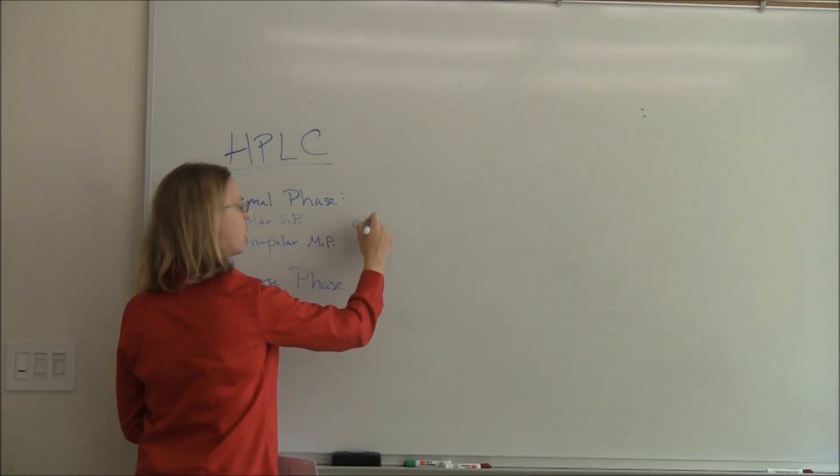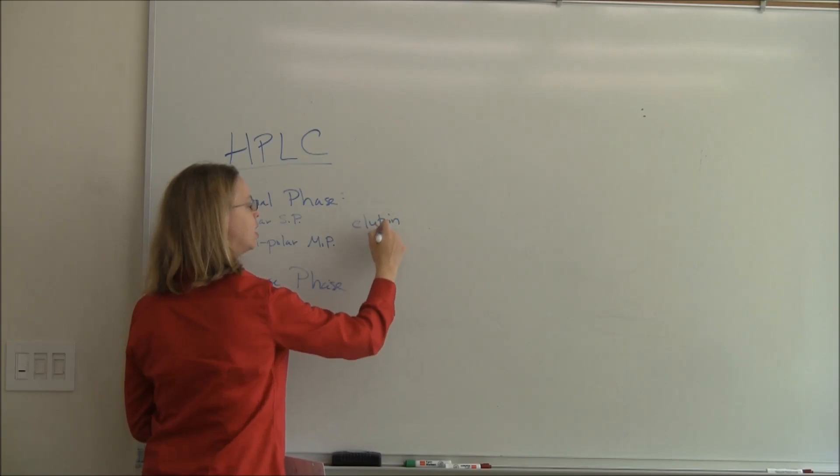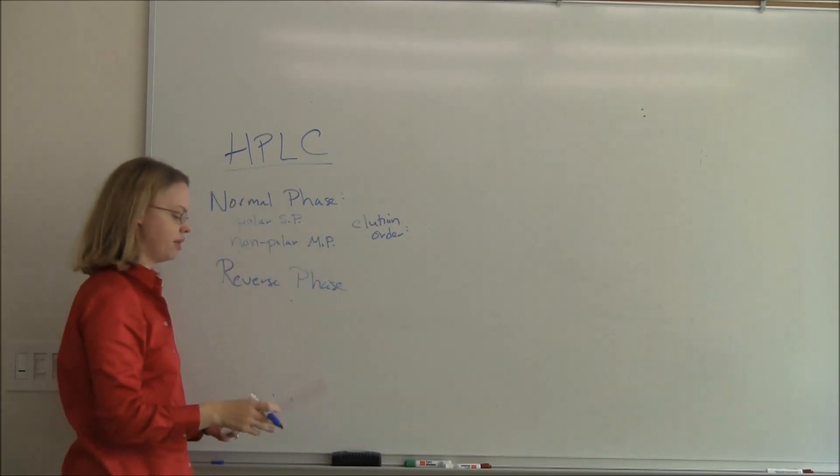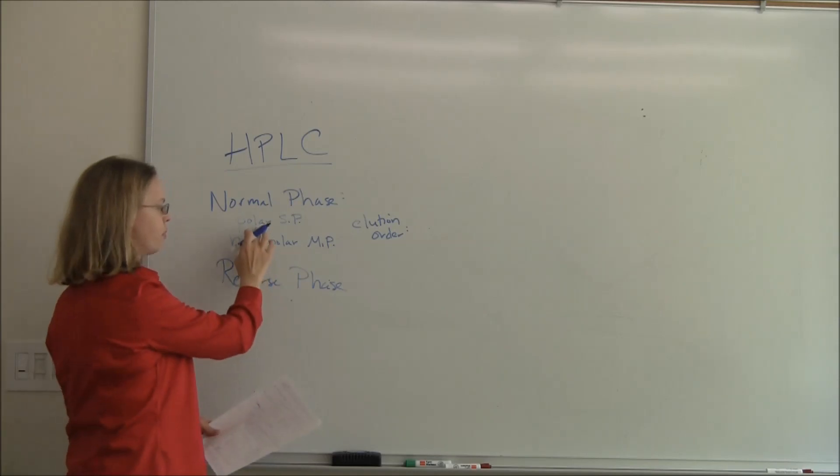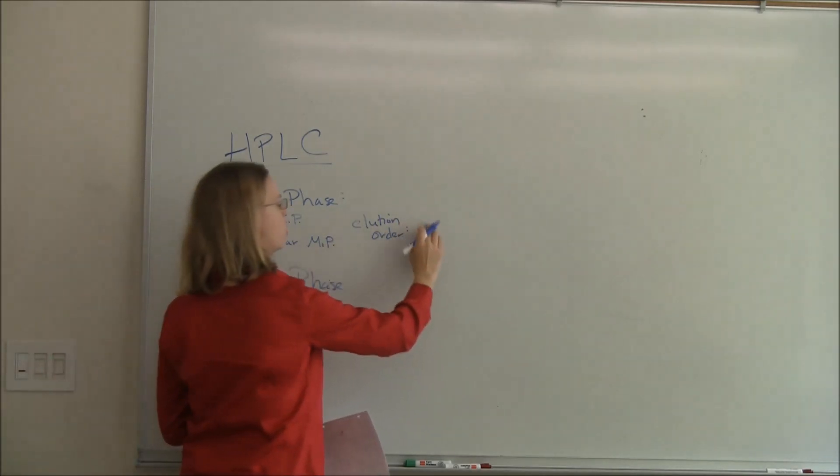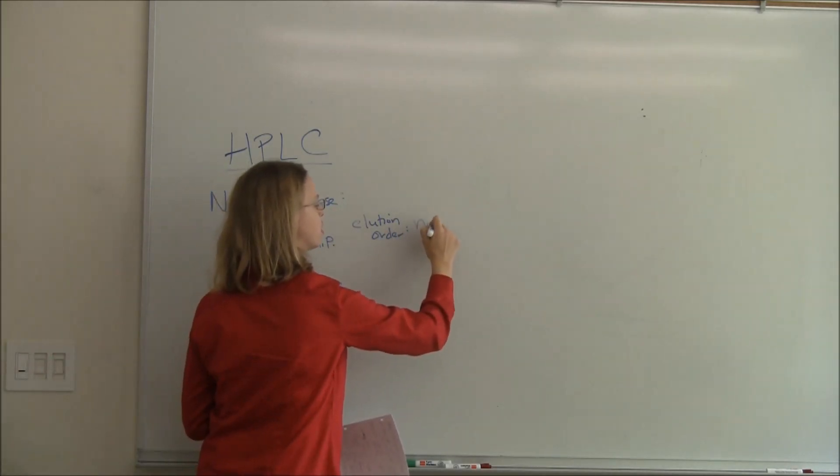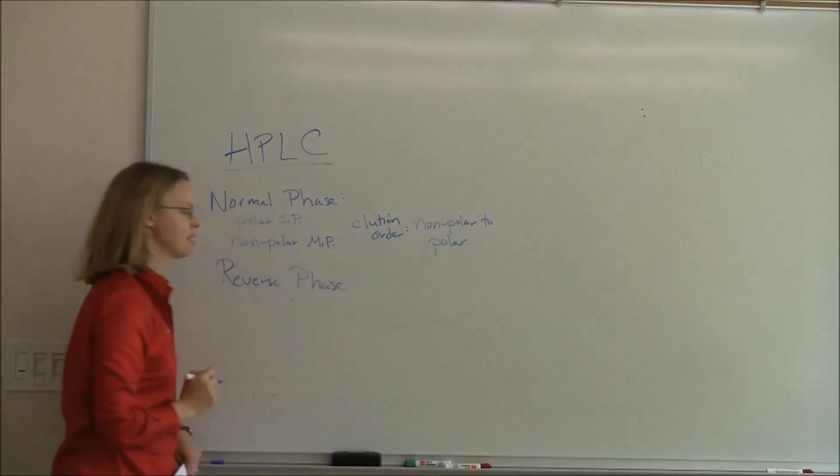So the elution order of my analytes - if the stationary phase is polar, then this is non-polar, it means the non-polar things are going to want to come out first because they're going to want to stay in the mobile phase, and then the polar ones are going to come out last because they're going to be more retained.